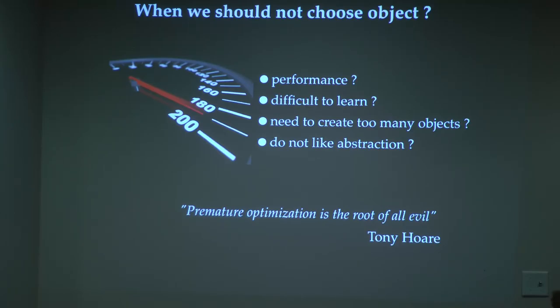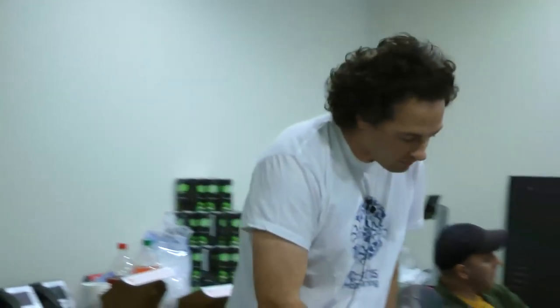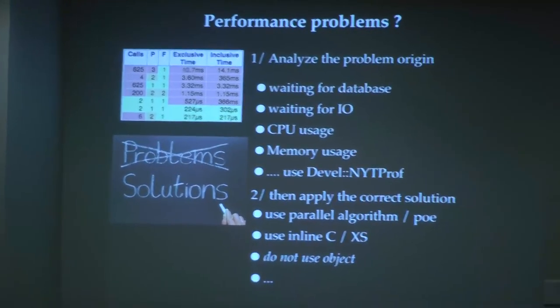None of the approaches is really better than the others — they all have advantages and drawbacks. Sometimes objects might be inappropriate. But the good habit is: don't care about early optimizations. Just develop code that's easier to improve. Only when you have a performance issue will you know where it's coming from and have solutions. Don't block yourself from using objects because you think it will make your code slower.